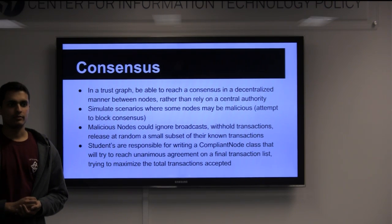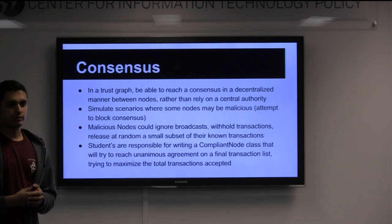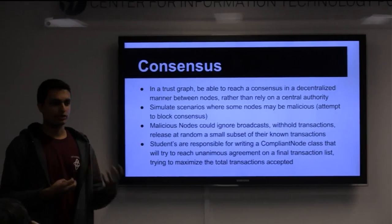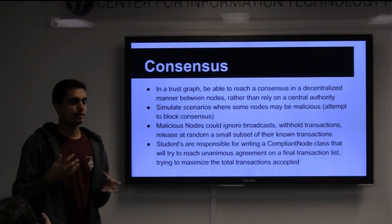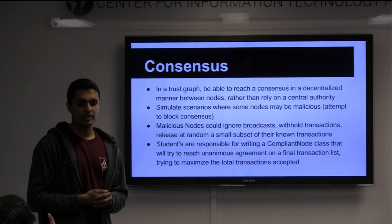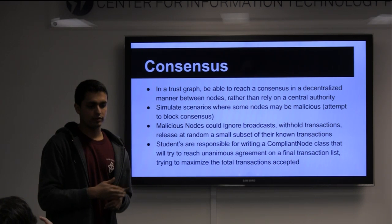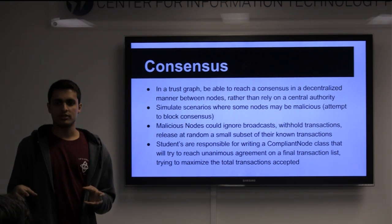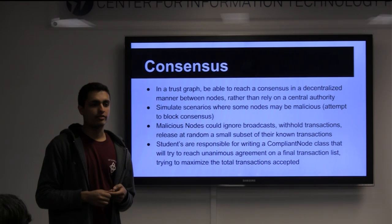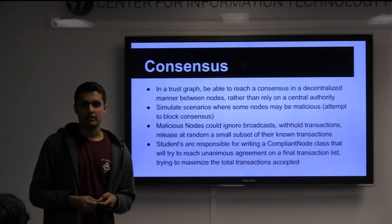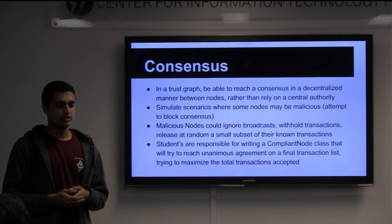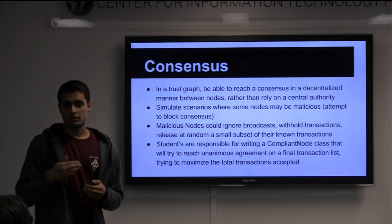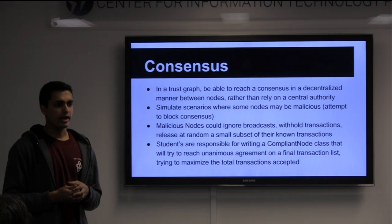For assignment two, we studied consensus. We talked about Ripple as an example of a payment system premised on consensus. You have a network called a trust graph, and within the graph every node sets up trust relationships specifying which other nodes it trusts and communicates with. Students implemented a compliant node — a large fraction of nodes in the network run the compliant node code the students write. Along with these compliant nodes, there are also malicious nodes running on the same network. The malicious nodes can have a variety of strategies — at the very basic end they could just be dead, meaning they don't communicate or propose transactions, while on the opposite extreme they could be clever and selectively release transactions to trick other nodes into believing they are not malicious.